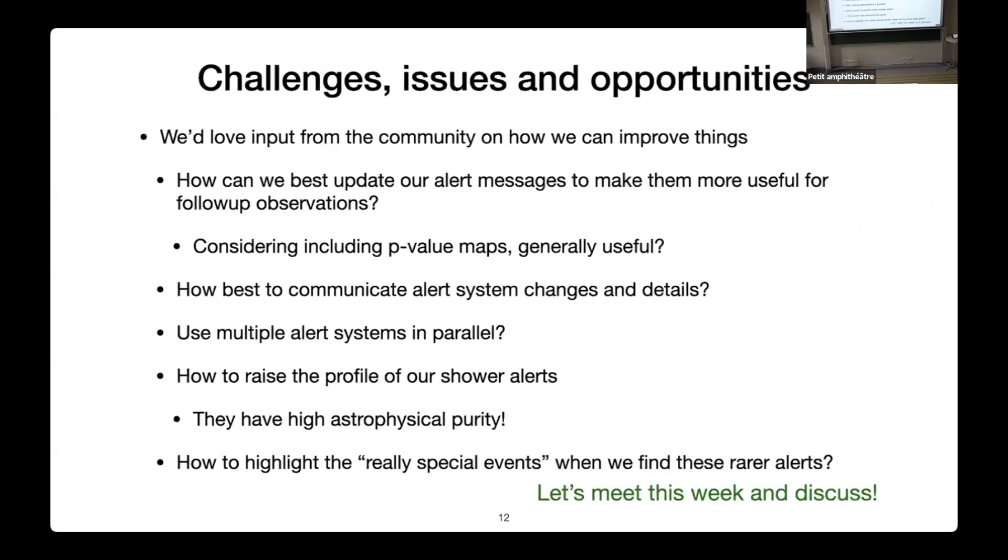How can we best make our update, our alert messages, more useful for everyone out there in the community? We're considering including LIGO-like sky maps along with these alerts. Is that something people are going to find useful? How best to communicate with you guys when we make changes? It's not clear. We've been putting out documents that are in the old GCN classic system and with the newer systems, we've been using the GCN webpage on the mission plan, but what's the best way to make sure everyone's clear on what's going on? Should we be using multiple alert systems, GCN and SCIMMA and other things, or just focus on one?